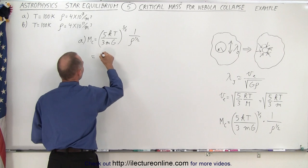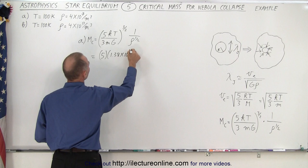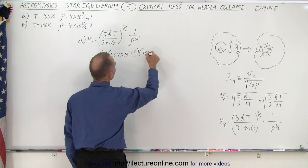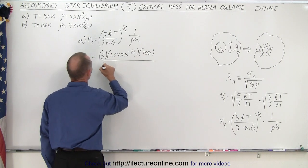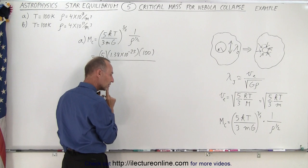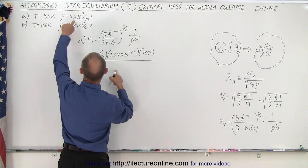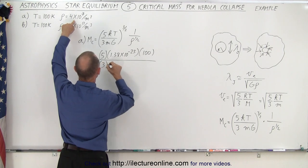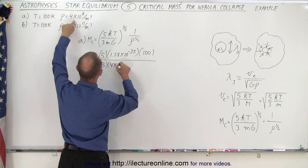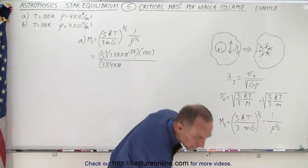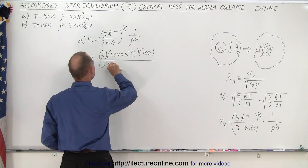So let's see, 5 times, that's 1.38 times 10 to the minus 23. The temperature is 100 Kelvin and that's 3 times the molecular mass. Let's see, well first of all we have 4 times 10 to the... no that's for the density we don't need that, we just need the mass. Sorry about that, I'm getting a little off track here, let's get rid of that.